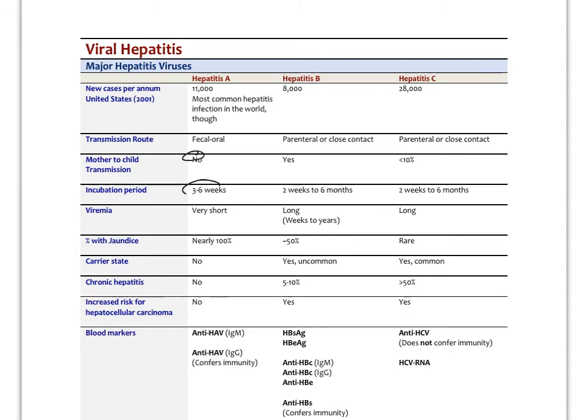Incubation period is about three to six weeks, very short viremia. Jaundice is going to vary. It could be pretty mild jaundice in some cases. No carrier state, no chronic hepatitis, no increased risk for hepatocellular carcinoma. We use our anti-HAV IgM and IgG antibody tests to tell us about active or immunity. These antibodies will be elevated if you've had the immunization as well, the IgG antibodies, and that would tell you you have immunity.